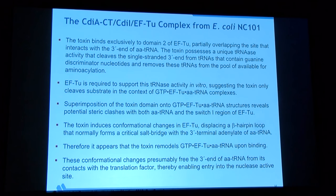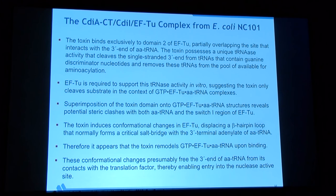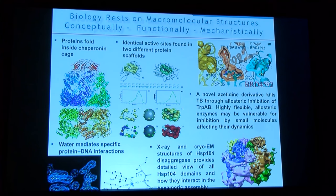The elongation factor is utilized by the toxin to present aminoacyl-tRNAs. They need to have a G in position four from the three-prime end, and this cleavage cannot be restored by rebuilding the tRNA — it kills that set of tRNAs. Biology rests on macromolecular structures, conceptually, functionally, and mechanistically.